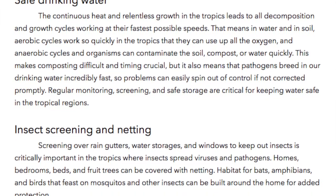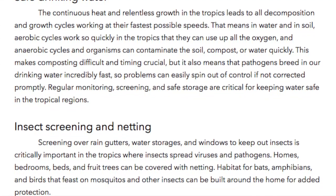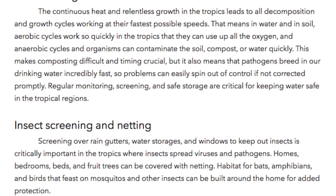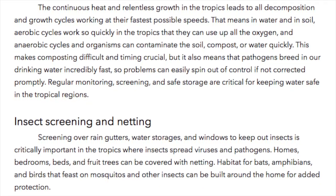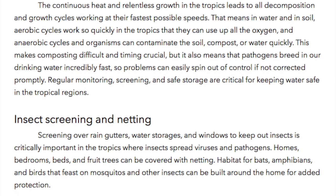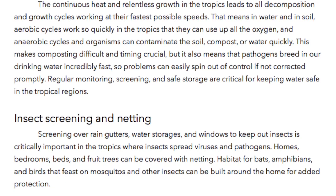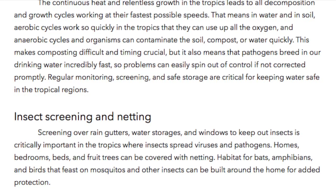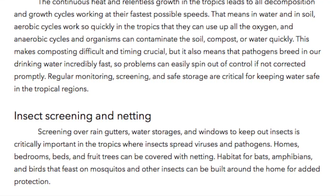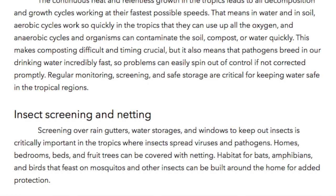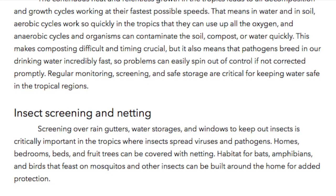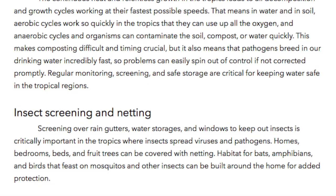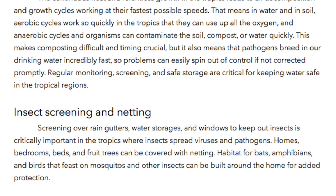Insect Screening and Netting. Screening over rain gutters, water storages, and windows to keep out insects is critically important in the tropics, where insects spread viruses and pathogens. Homes, bedrooms, beds, and fruit trees can be covered with netting. Habitats for bats, amphibians, and birds that feast on mosquitoes and other insects can be built around the home for added protection.